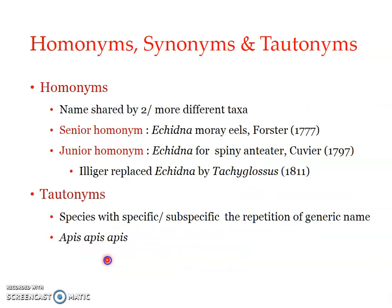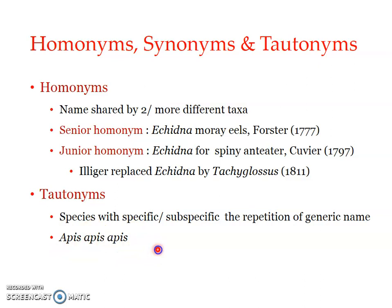Another naming system is tautonymy. Tautonymy refers to the naming of a species or subspecies where the generic name, specific name, and subspecific name are the same, or the specific and subspecific names repeat the generic name. An example is Rattus rattus rattus for the rat. Such names are known as tautonyms.